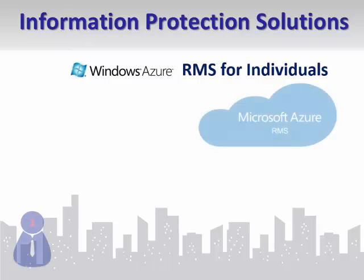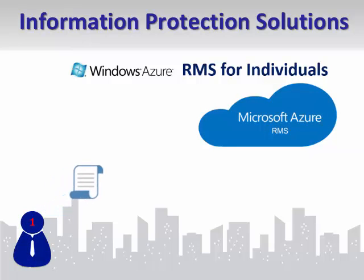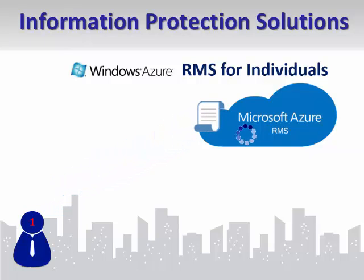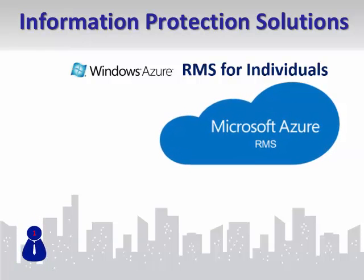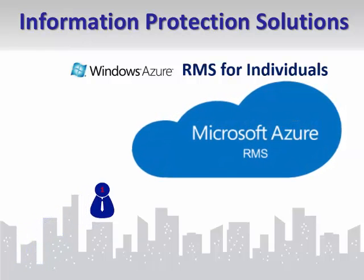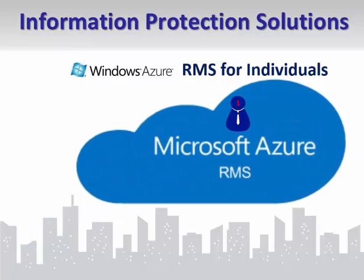What happens in the background when a user signs up for an RMS for Individuals account? When the first user from an organization requests a subscription for RMS, the domain name supplied in their email address is cross-referenced to see whether it is already associated with an Office 365 or Azure Active Directory subscription. If not, an unmanaged Azure Active Directory account will be created for use.